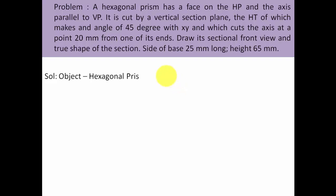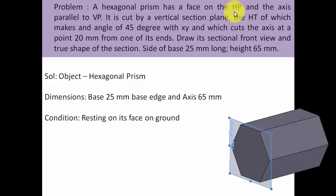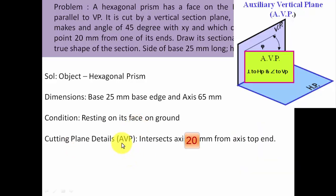Let's write down the details. The object is a hexagonal prism with dimensions: base edge 25 mm, axis length 65 mm. The condition is face on the HP — out of the six rectangular faces, there is one face which is grounded or in absolute contact with the horizontal plane, and that should reflect perfectly in your drawing. Cutting plane details: we have an AVP auxiliary vertical plane that intersects the axis 10 mm from the axis top end.